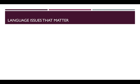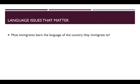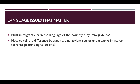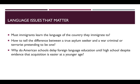Let's start by asking some questions about language that you may not have thought about before, but that I am sure you will find quite important once you give them a thought. Must immigrants learn the language of the country they migrate to? And if yes, why and how? Should the host country provide them with resources to do so? How can professionals evaluating claims of asylum seekers distinguish between true refugees and war criminals that only pretend to be refugees? Why do American schools delay foreign language instruction until high school, despite ample scientific evidence that acquisition is less effortful at a younger age?